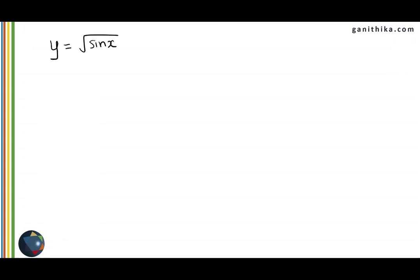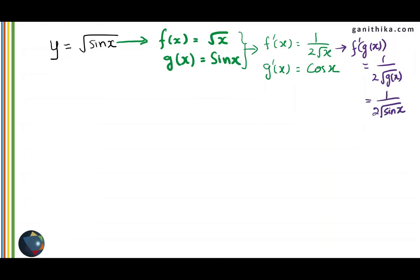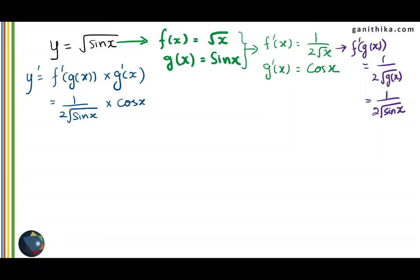Next example: y equal to root of sin x. Identify the two functions: f of x is the square root function, g of x is sin x. Therefore, f dash of x is 1 over 2 root x and g dash of x is cos x. We need f dash of g of x, which is 1 over 2 root of g of x. Since g of x is sin x, in the place of x we put sin x in the derivative of f. So we write 1 over 2 root sin x, multiplied by g dash of x which is cos x. The final answer is cos x over 2 root of sin x.